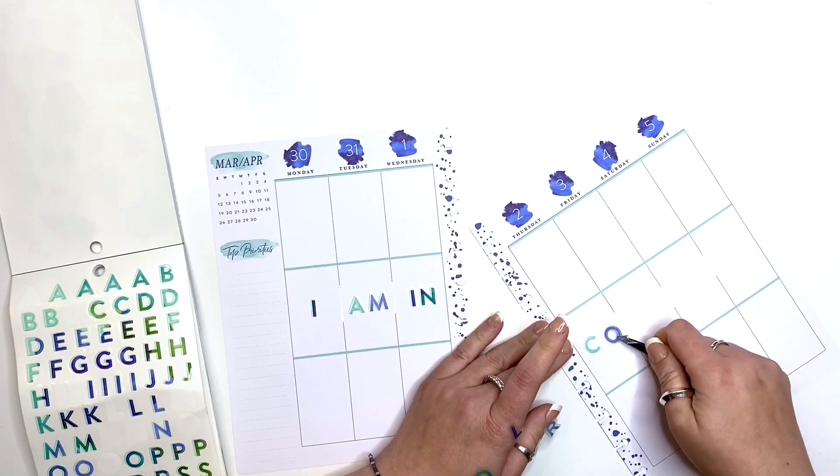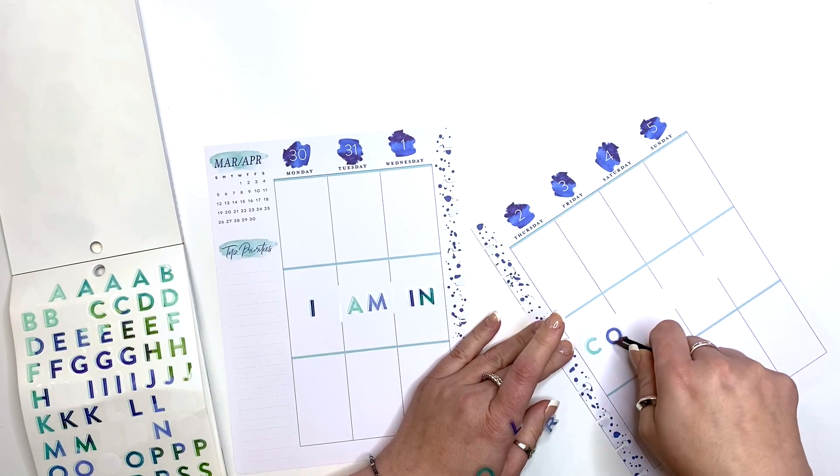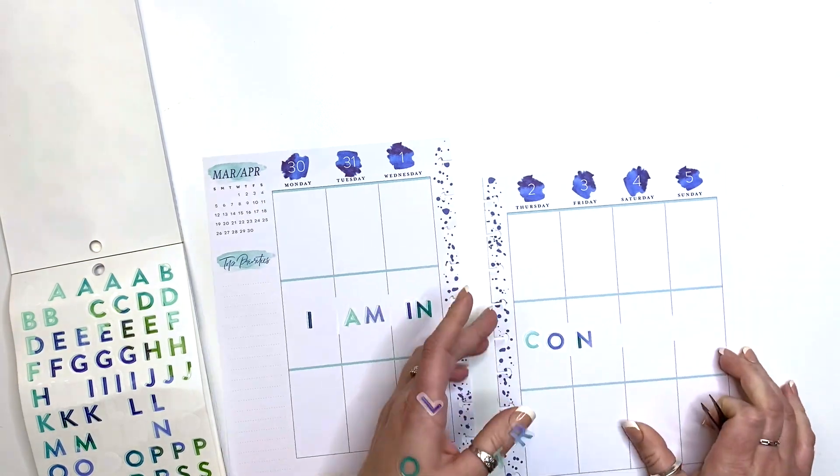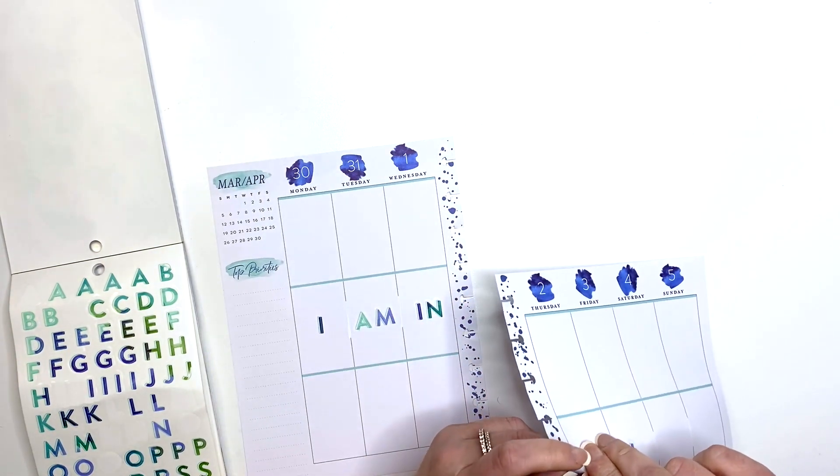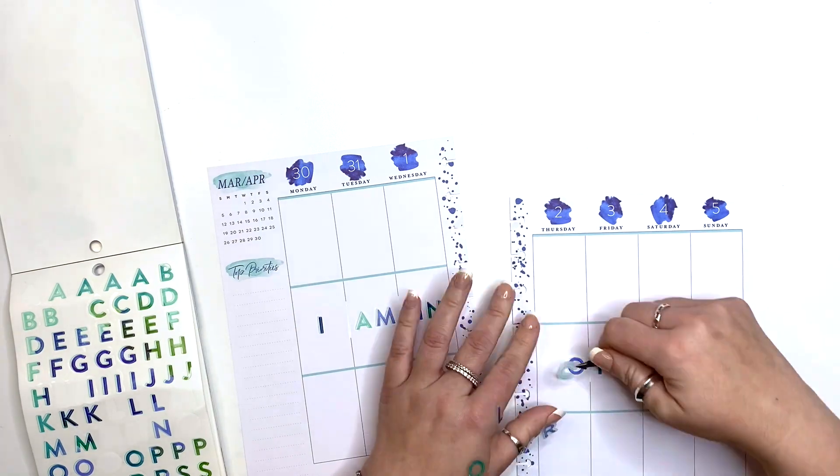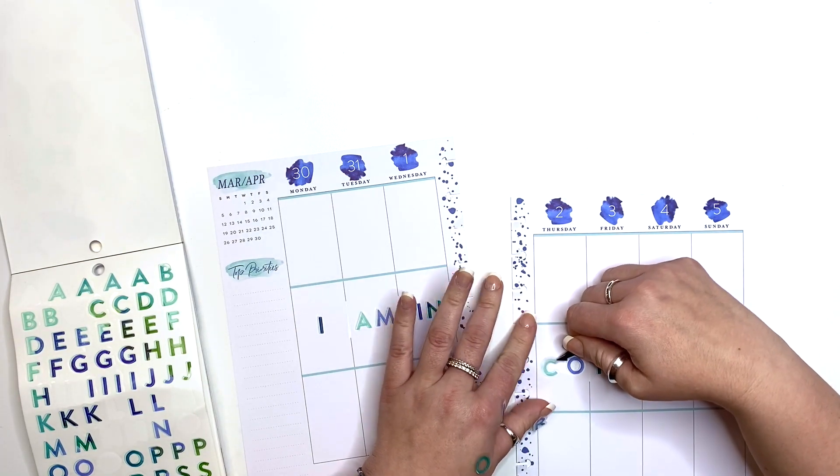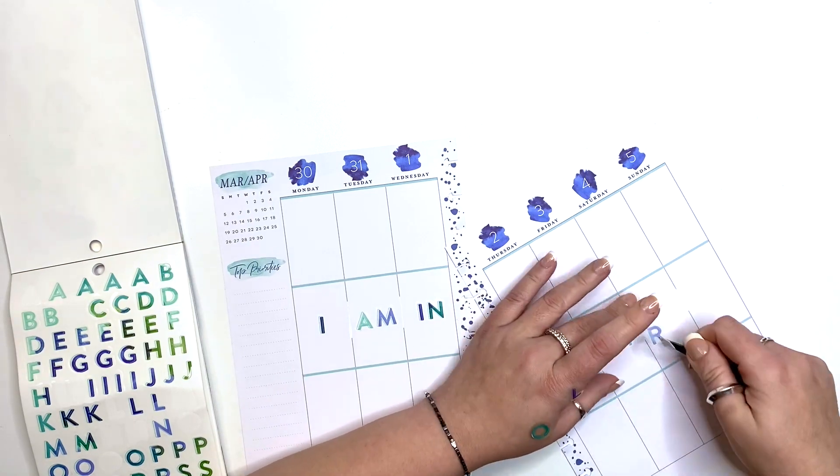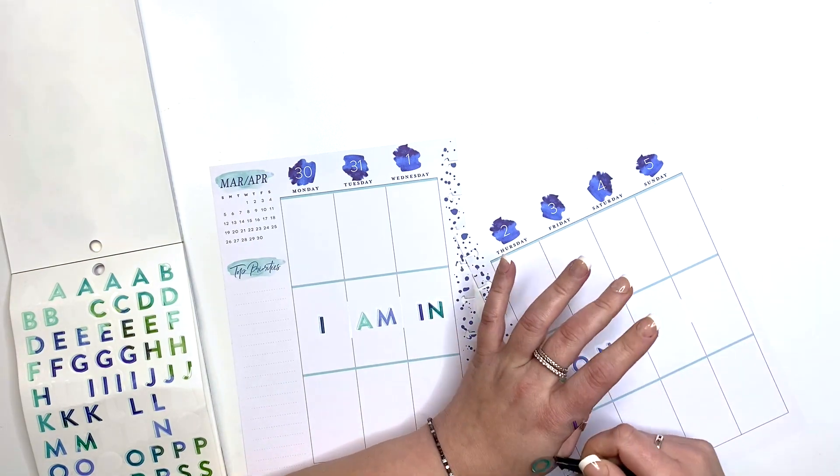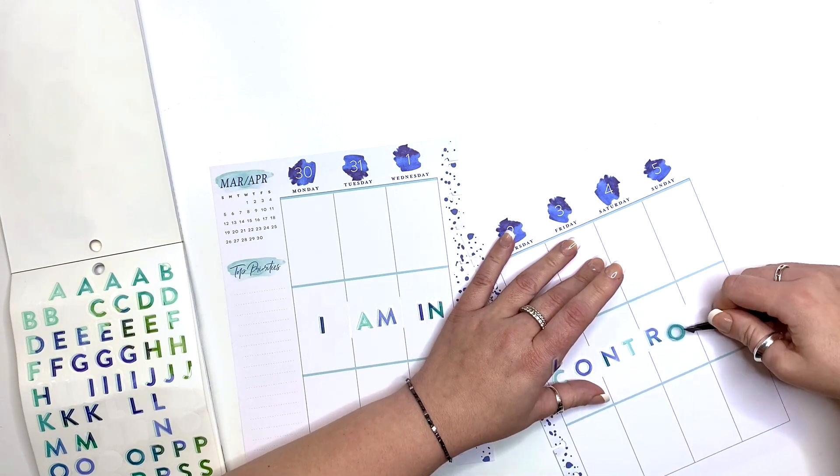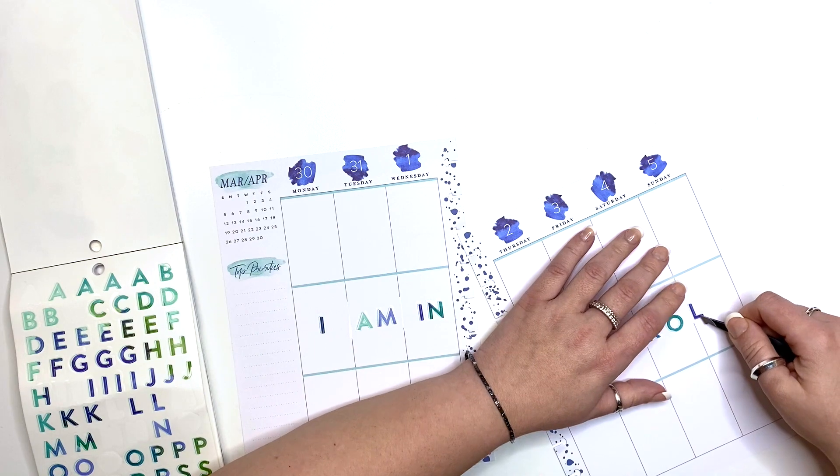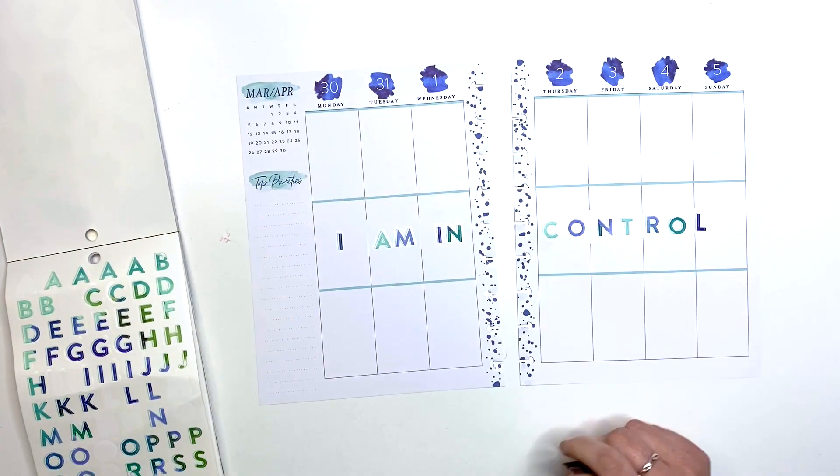And the definition, the best definition I think of control, is to have power to make decisions and how something is managed or done, or the ability to direct the actions of someone or something like an action, method, law, limits, growth, feelings, etc.